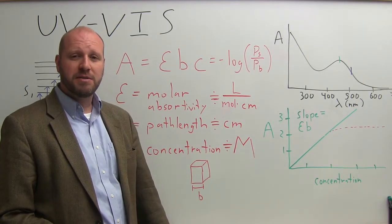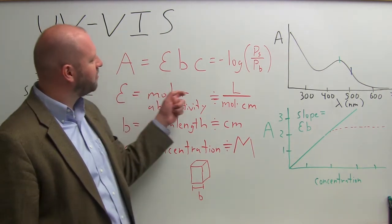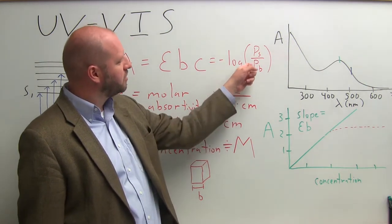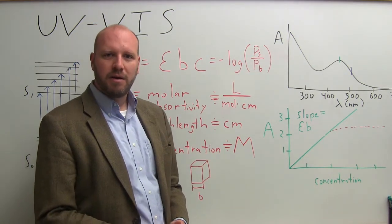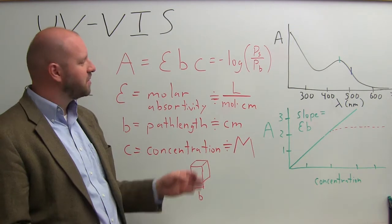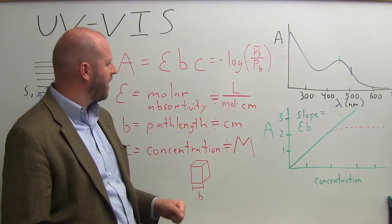We can use the transmittance to quantify the concentration of analyte in our sample. Absorbance is defined as minus the log of the transmittance, which is the power through the sample divided by the power through the blank. The Beer-Lambert relationship says this absorbance is equal to epsilon BC, where C is the concentration of my analyte.